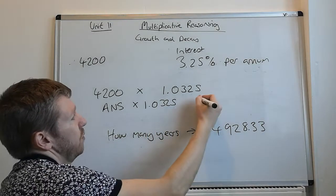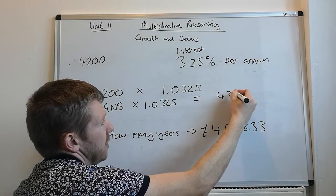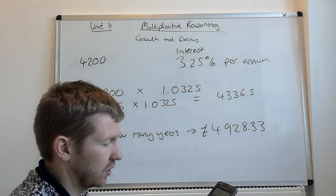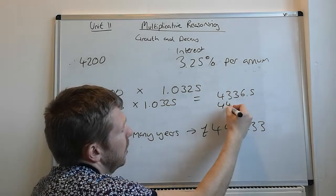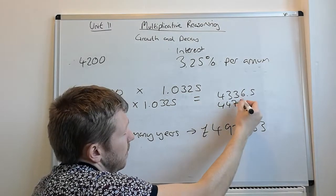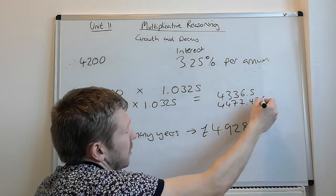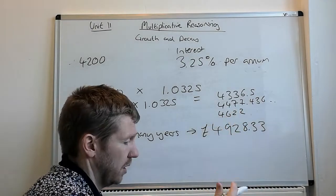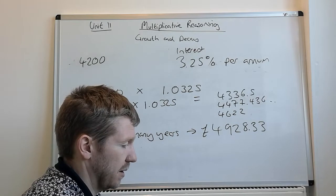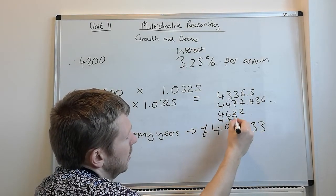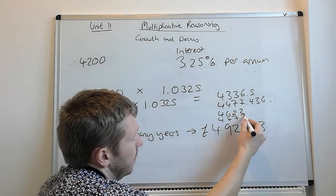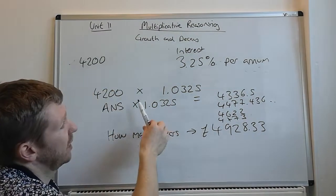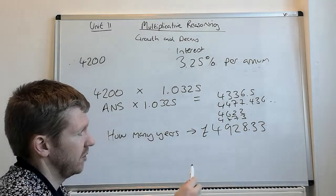So, for the first one, after year one, it's 4,336.5. You can then just press equals again. It's already stored on the calculator. 4,477.436. 4,622.9529. 4,928 is the next one. So, we can then work it out. That's 1, 2, 3, 4, 5 years.